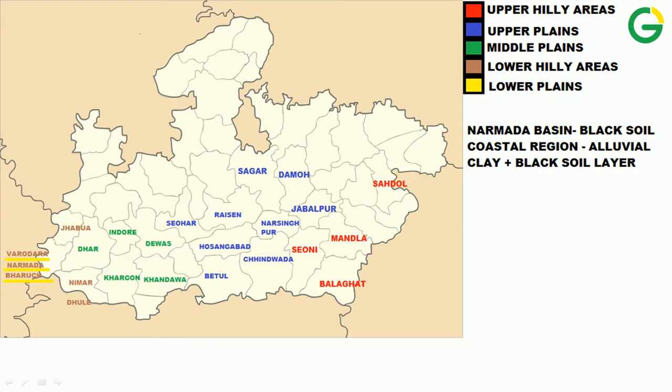The Narmada Basin is mainly composed of black soil because it is related to the Deccan, which is made up of basalt. Basalt forms black-colored clay soil. In coastal areas on the Gujarat side, it is alluvial clay plus a black soil layer.